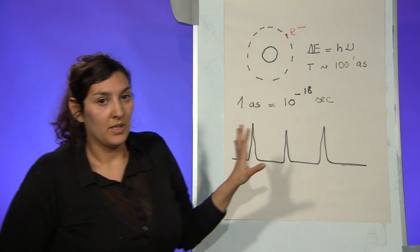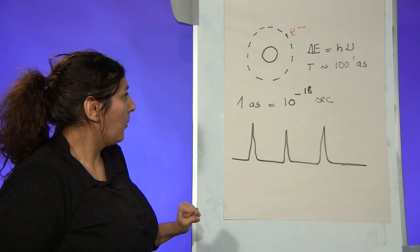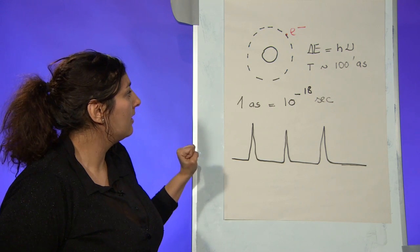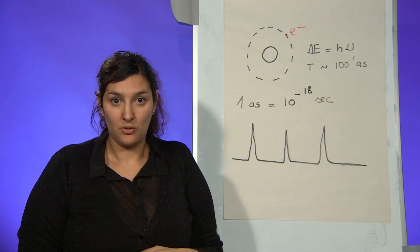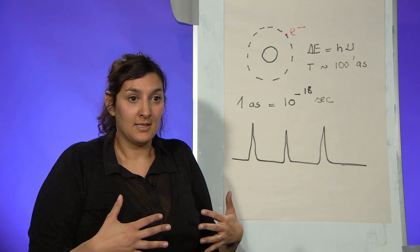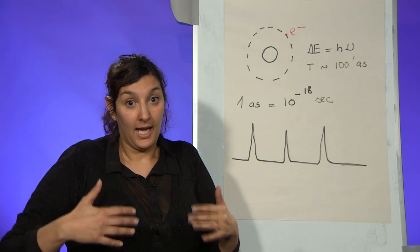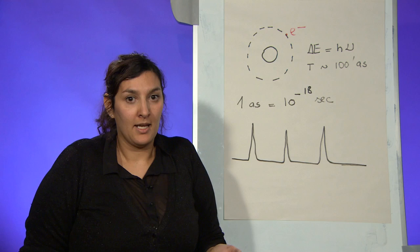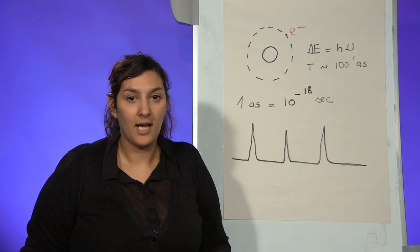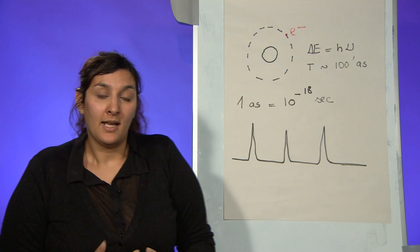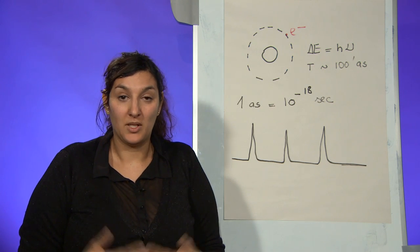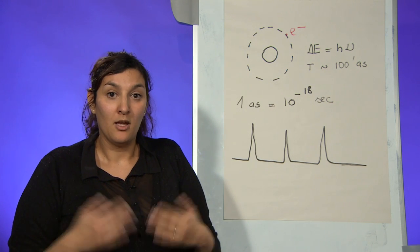Now, what type of information we can get thanks to these pulses? We can actually see electron motion in big systems, like molecules, and we can see the changes of the molecules and how those changes appear, basically how a chemical reaction happens. And the other possibility is also to understand how damage in cells happens, because any damage in cells starts by a motion of electrons.